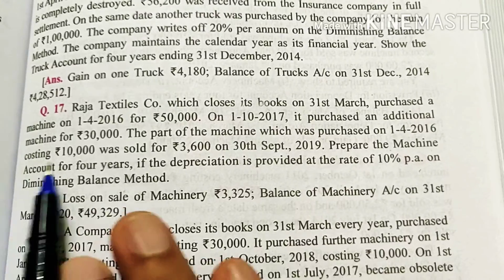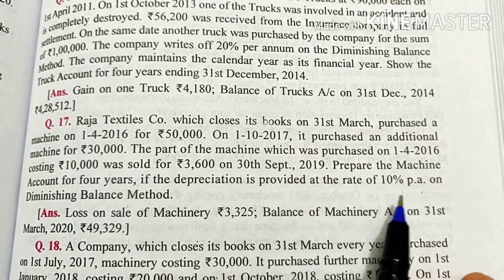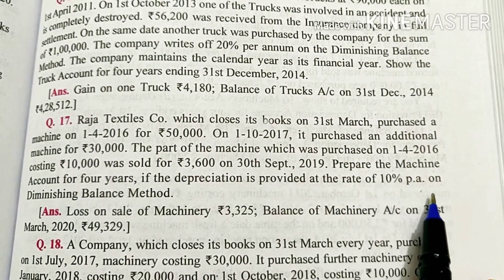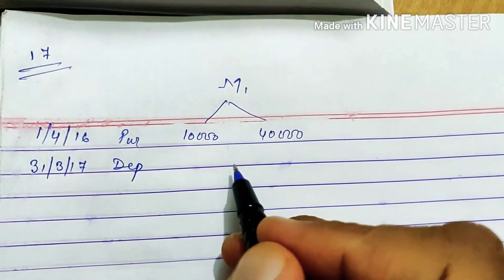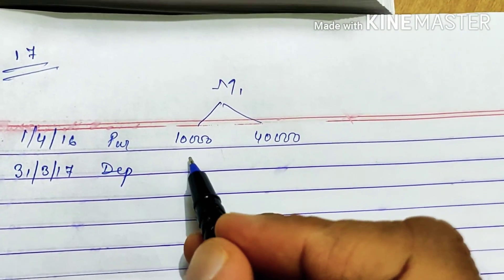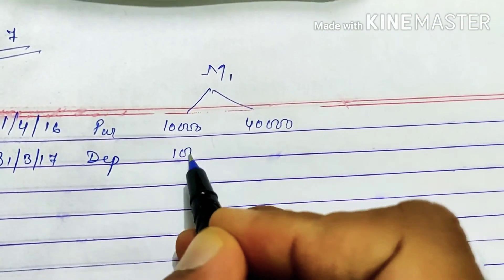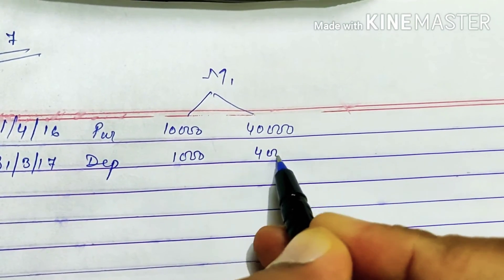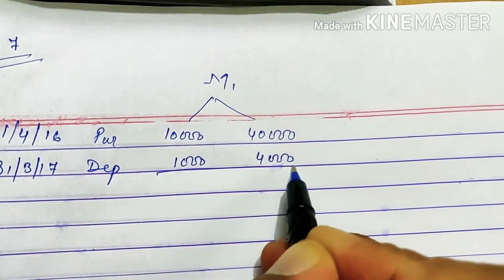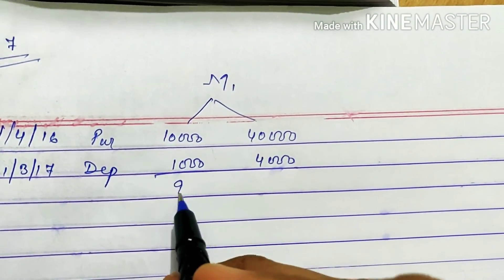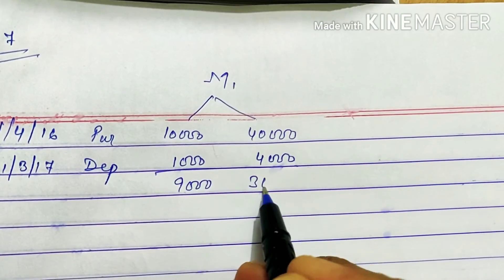This year we will not buy anything new. So we will depreciate 10% per annum. On 31st March 2017 we will depreciate. This year depreciation comes to Rs. 1,000 on the 10,000 part and Rs. 4,000 on the 40,000 part. So the balances become Rs. 9,000 and Rs. 36,000 respectively.